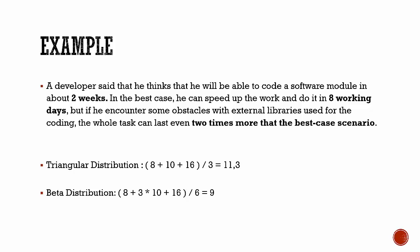Assuming triangular distribution, the estimate for this task is (8 + 10 + 16) / 3 = 11.3 working days. Assuming beta distribution, the result is (8 + 3×10 + 16) / 6 = 54 / 6 = 9 working days.